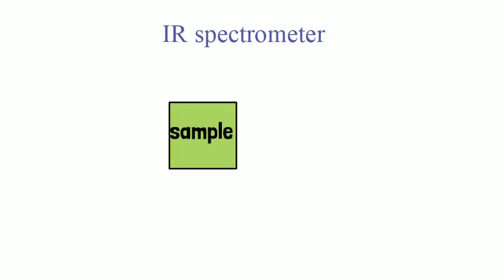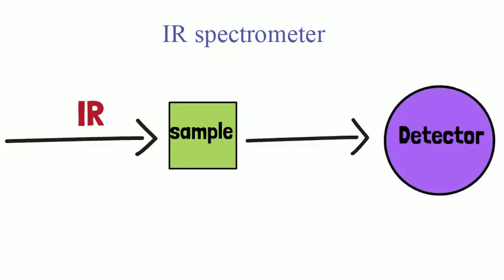The equipment used for IR is called an IR spectrometer. The sample is irradiated with IR radiation. The radiation interacts with the molecule, and depending on the molecule, some of the radiation gets absorbed and some will reach the detector. This generates a spectrum for us to interpret.